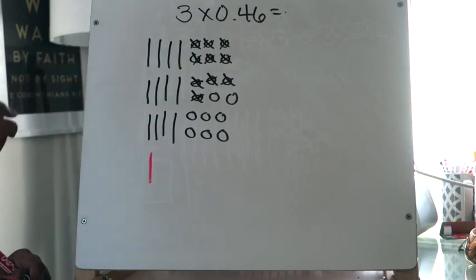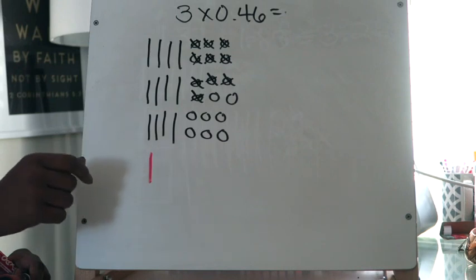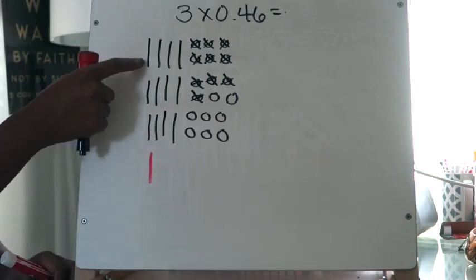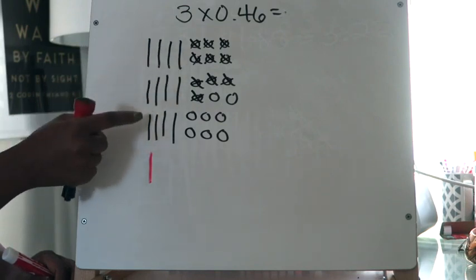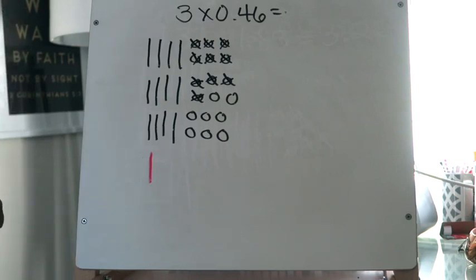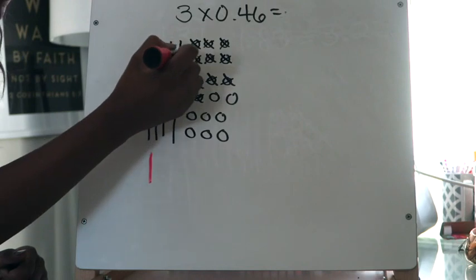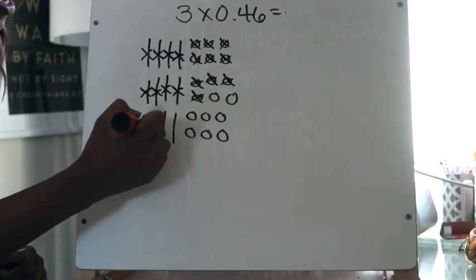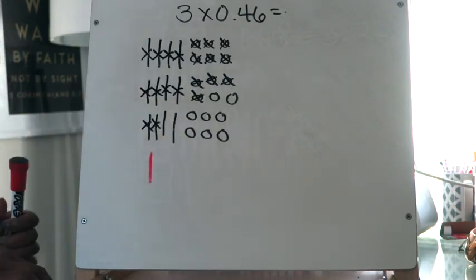Now I check my tenths to see if I have more than nine — if so, I regroup ten tenths into one whole. Counting my tenths: one, two, three, four, five, six, seven, eight, nine, ten, eleven, twelve, thirteen — definitely too many. So I take out ten tenths and regroup them as one whole, drawn in red to show it's a regrouped one.